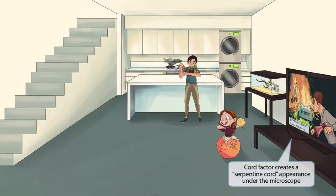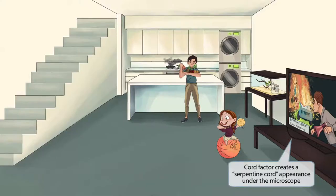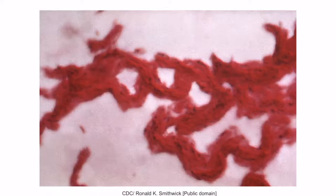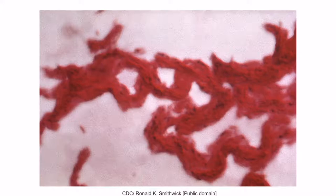If you look closely at the TV, there is a cord going from the base of the TV toward the snake cage. The cord helps you remember cord factor — a virulence factor produced by TB that forms micelles surrounding and protecting the organisms from the phagolysosome within macrophages. The cord next to the snake cage also helps you remember that these micelles create a serpentine cord appearance under the microscope, because they resemble snakes — a pattern that correlates strongly with virulence.